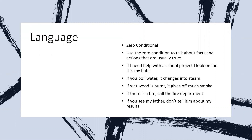So now going forward to the language part, the grammar part — it's about the zero conditional and the first conditional. Use the zero conditional to talk about facts and actions that are usually true. For example: 'If I need help with a school project, I look online' — it's a habit. Another example: 'If you boil water, it changes into steam' — this is a fact. And 'if wood is burned, it gives off smoke' — this is also a fact.